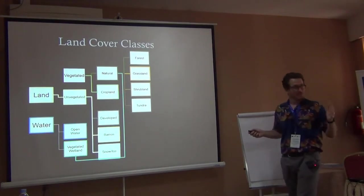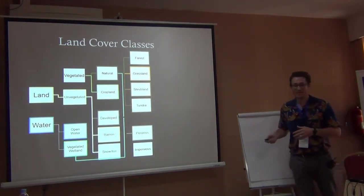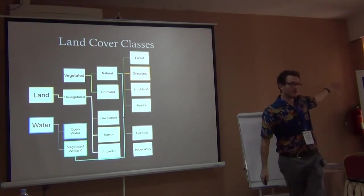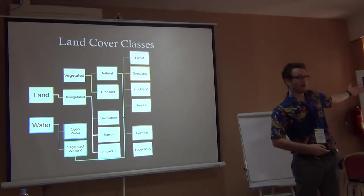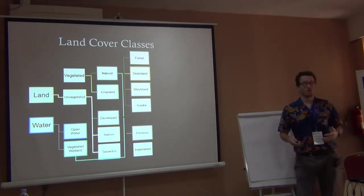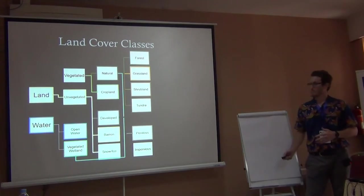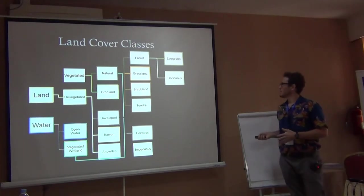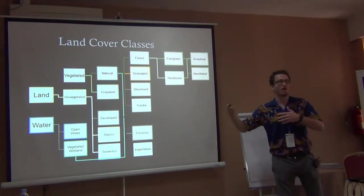Natural vegetation types include forest, grassland, shrubland, and tundra. Developed land can be pervious — meaning water can enter, like a soccer pitch — or impervious, like pavement, a road, or a roof. Forests can be evergreen or deciduous, broadleaf evergreen or needleleaf evergreen. We could keep going all the way down to the species level if we wanted to.